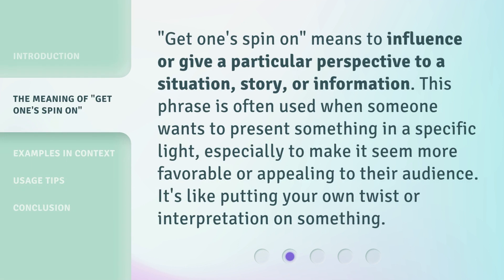'Get One Spin On' means to influence or give a particular perspective to a situation, story, or information. This phrase is often used when someone wants to present something in a specific light, especially to make it seem more favorable or appealing to their audience. It's like putting your own twist or interpretation on something.